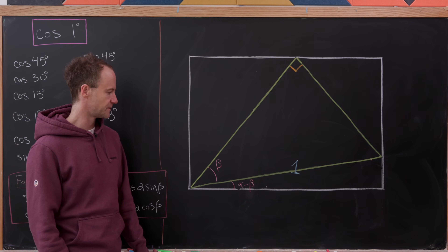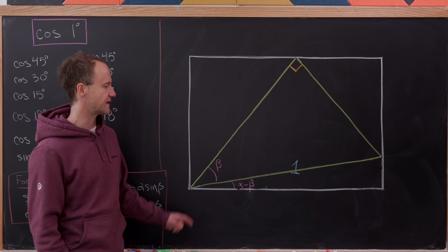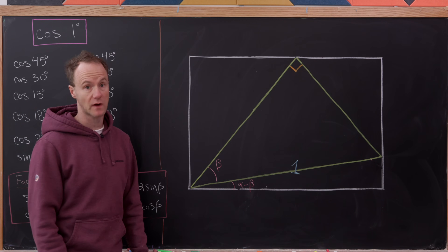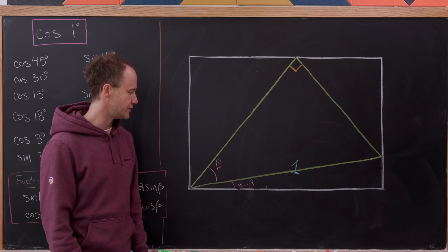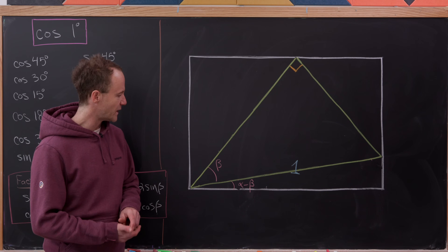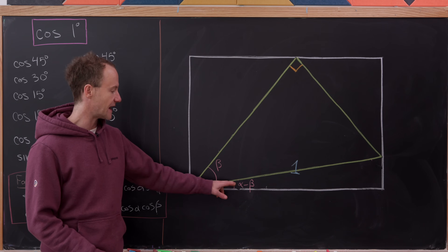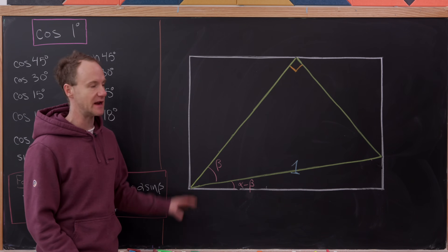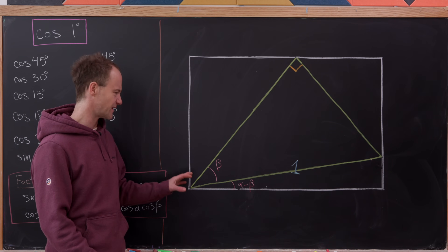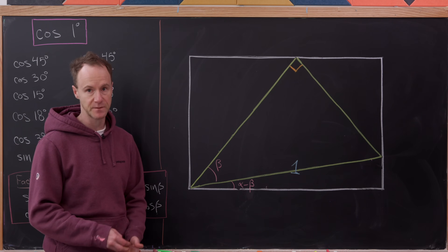So let's look at our picture. The order of drawing goes like this: we first draw a right triangle with hypotenuse 1 and angle beta, then we tilt that from horizontal at an angle of alpha minus beta, and then we put a rectangle around it so that it's intersecting at all of these vertices.